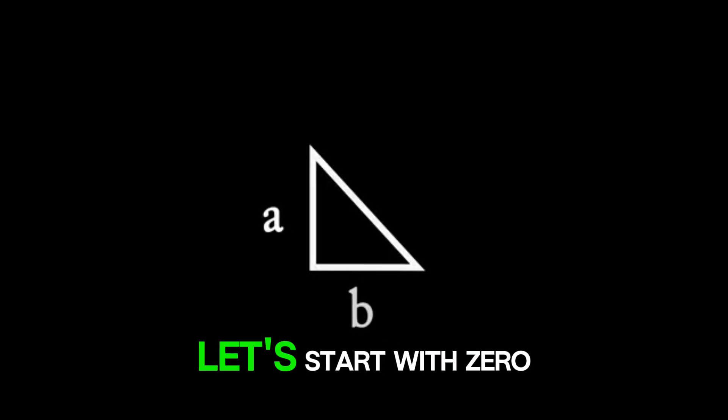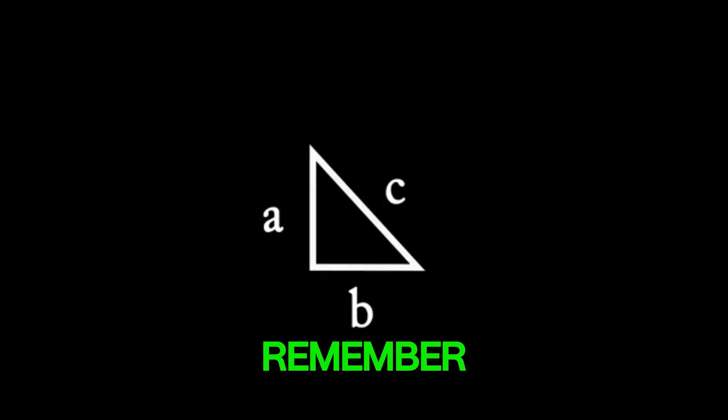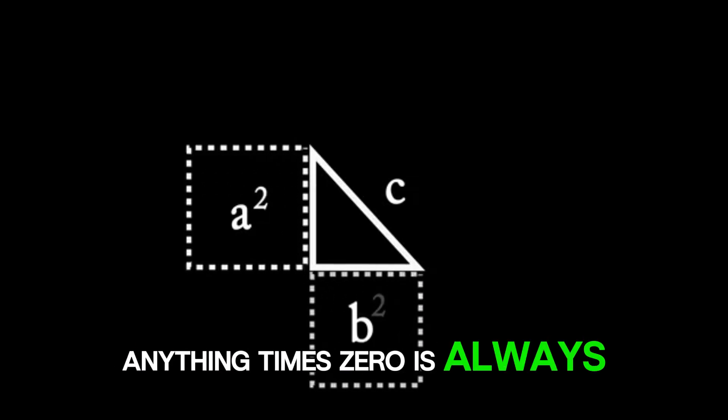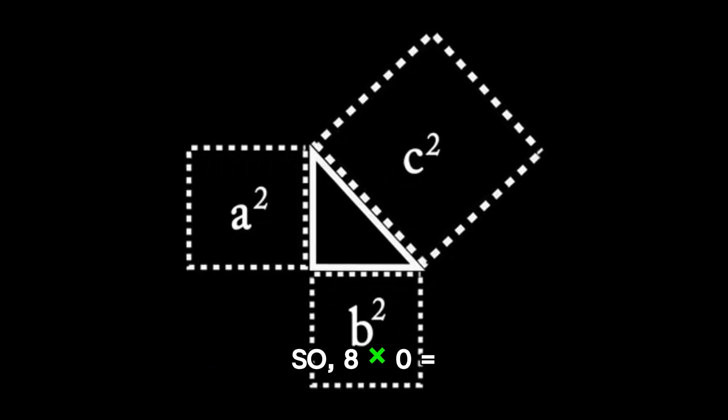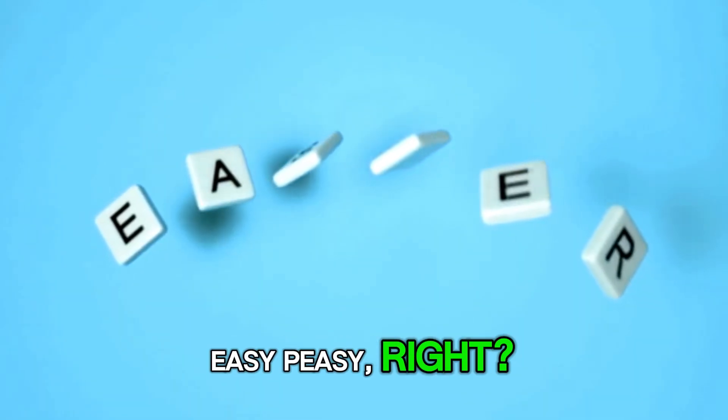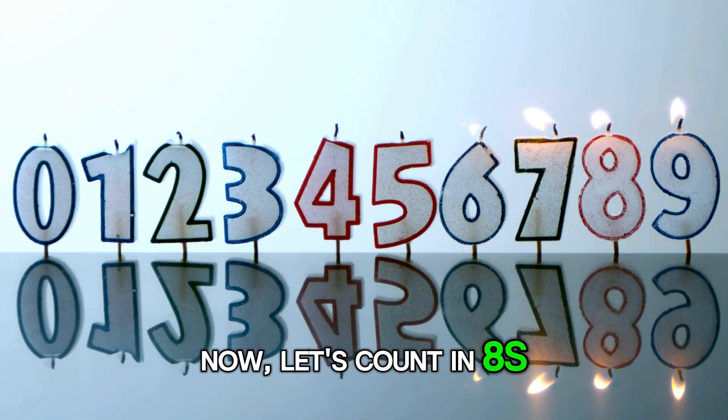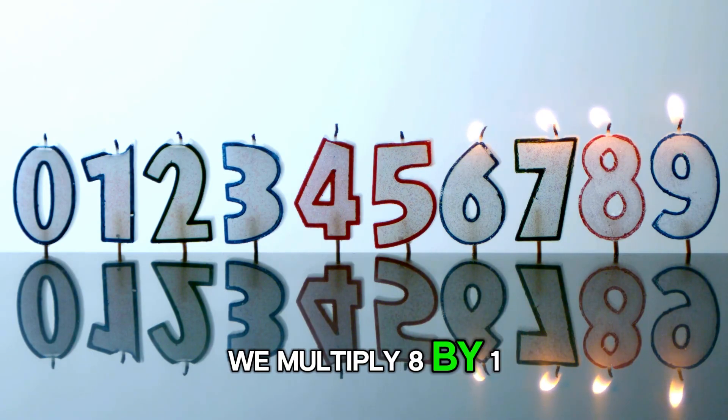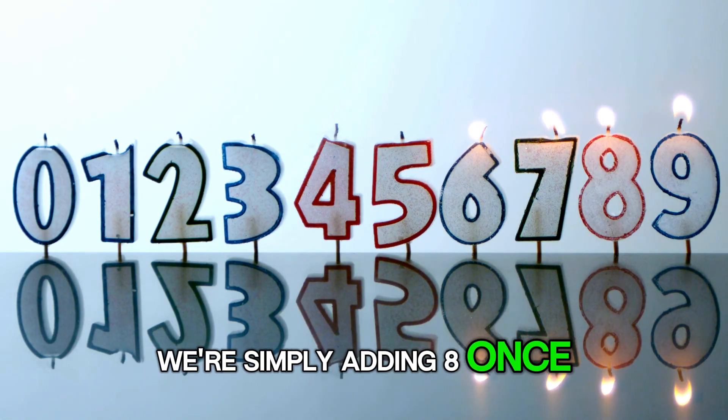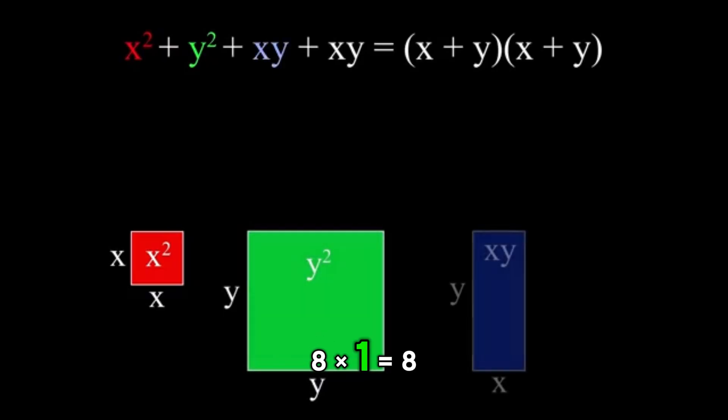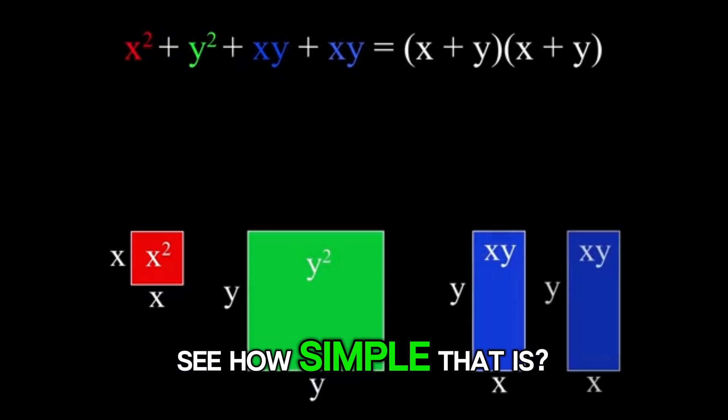First things first, let's start with zero. Remember, anything times zero is always zero. So, eight times zero equals zero. Easy peasy, right? Now, let's count by eights. When we multiply eight by one, we're simply adding eight once. So, eight times one equals eight. See how simple that is?